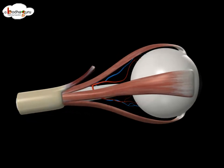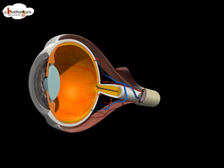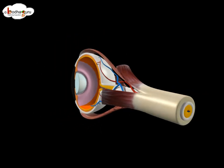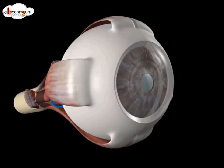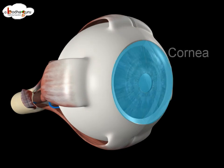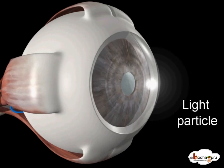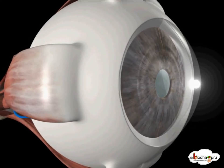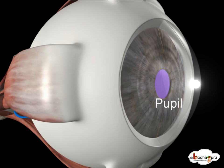Our eye is like a camera with a lens. The cornea focuses the light entering the eye. This circular structure is the iris, with an opening in the middle called the pupil.